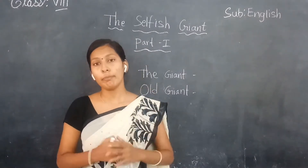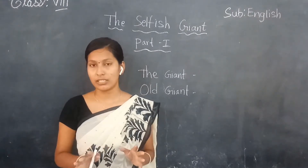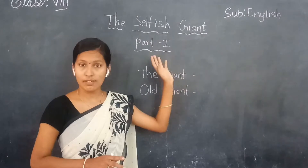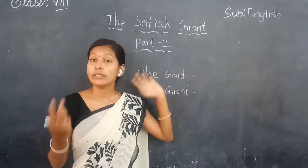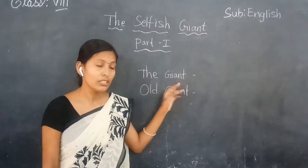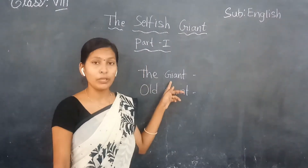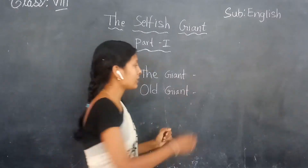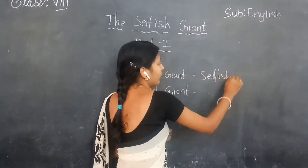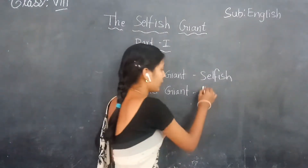If you remember, I said we have two main characters in this lesson. The first one is Jane — the selfish one. The second one is Old Jane — the kind one.